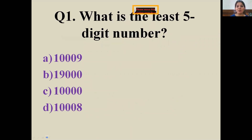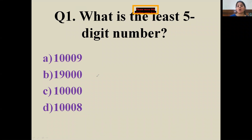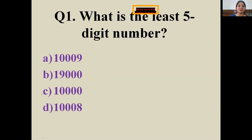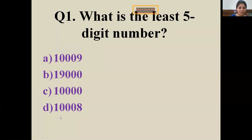The first question: what is the least five-digit number? Options are in front of you — A, B, C, D. This is the easiest one! The least five-digit number is the first number that has five digits. After 9,999 we have 10,000. So 10,000 is the least five-digit number — it has five digits.